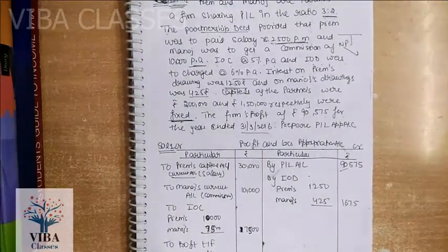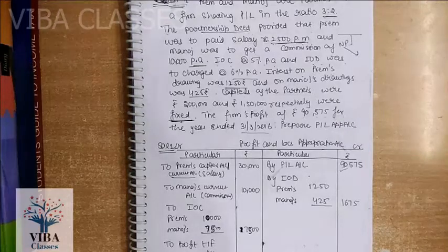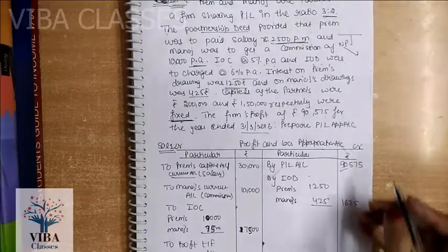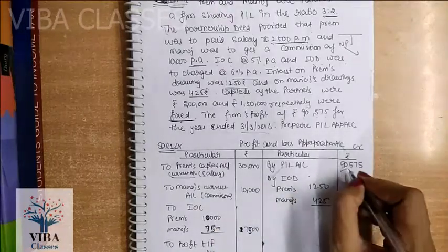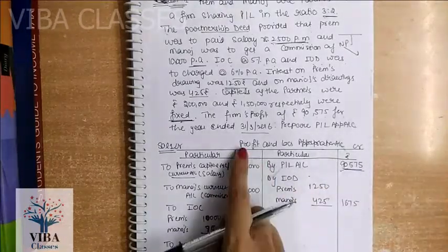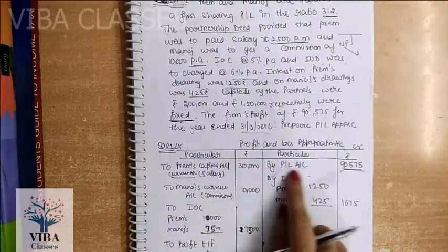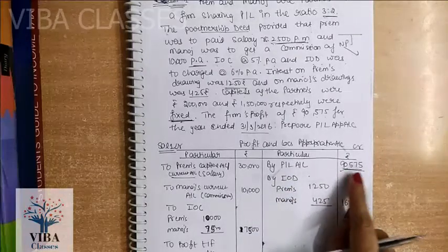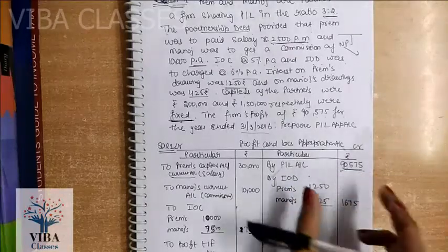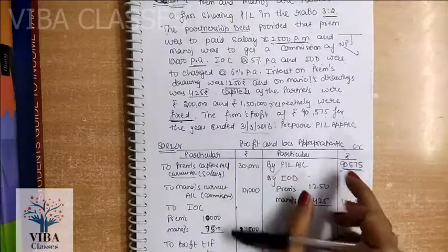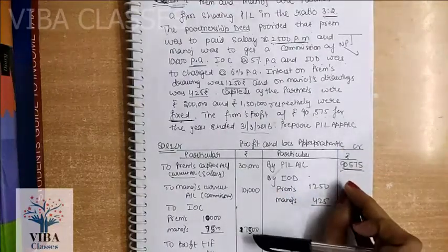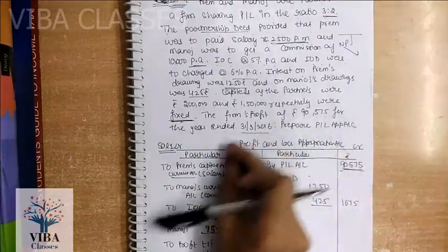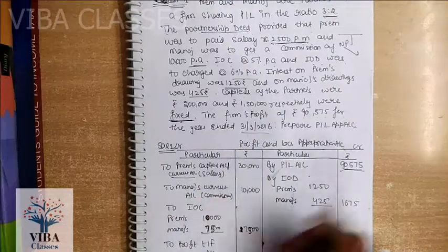The terms and conditions depend on the partnership deed. Sometimes, if salary is treated as a charge, then you have to treat it accordingly. In the P&L Appropriation account, items that increase the profit are written on the credit side, and items that reduce the profit are written on the debit side. That is the normal rule.